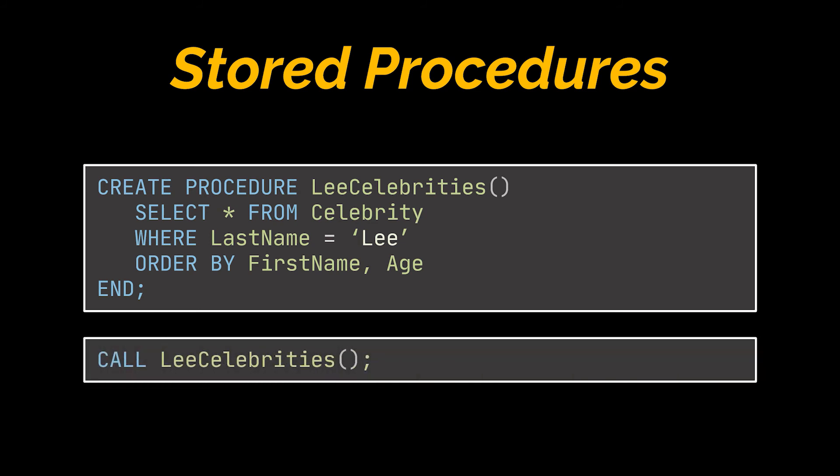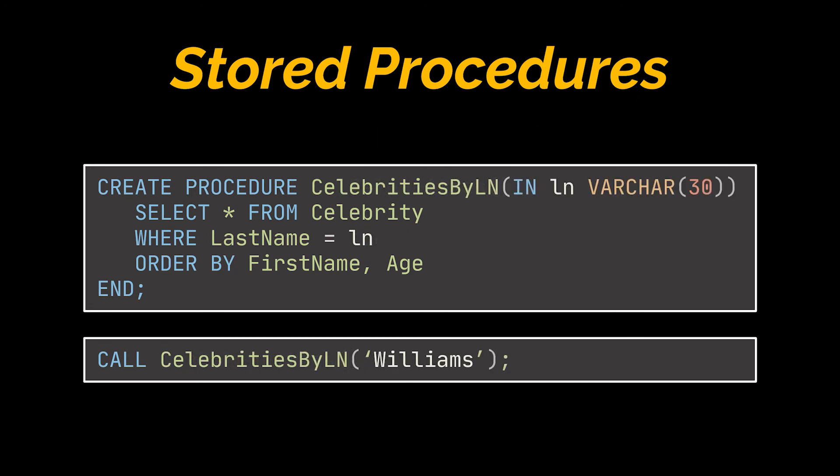These keywords may differ from one database management system to another, but they do exactly the same thing. For example, when the following procedure is called, it will select the celebrities with a last name equal to Lee, order these results by first name and age, and then return us these results. Additionally, and just like methods in Java, procedures can be parameterized. So the procedure we just created can be given a parameter, and this parameter can be used in the SQL statements written inside this procedure. In the example, we passed to the procedure a string or VARCHAR as a parameter, and this parameter was used in the WHERE condition of our SELECT statement inside the procedure. So now we have the possibility to select the celebrities by any provided last name, and not only those whose last names are equal to Lee like we previously had.